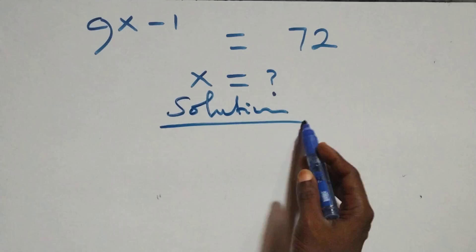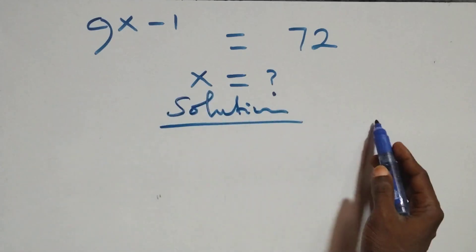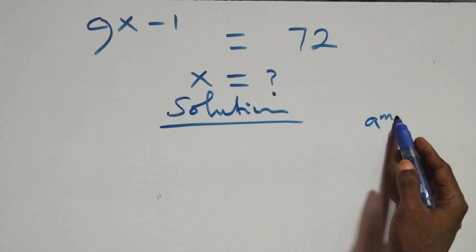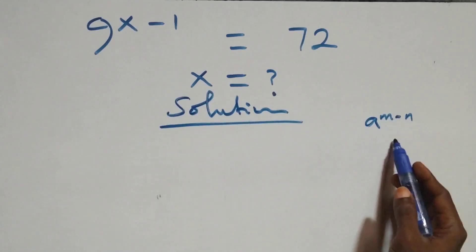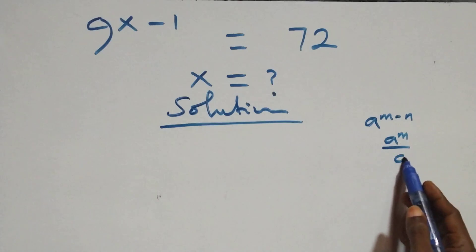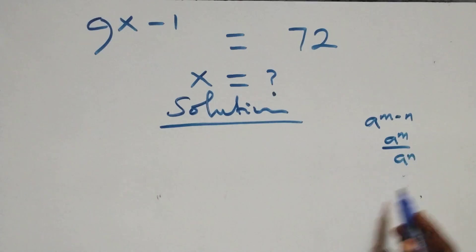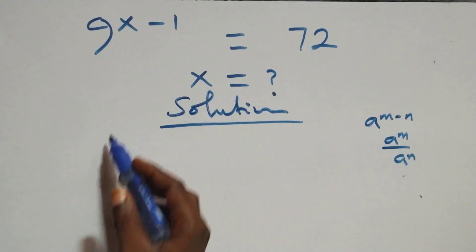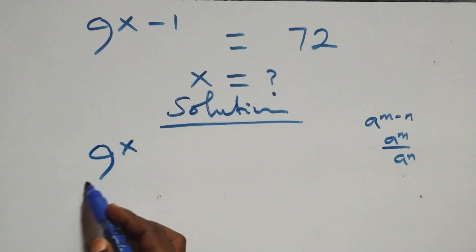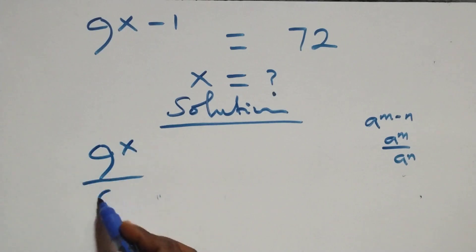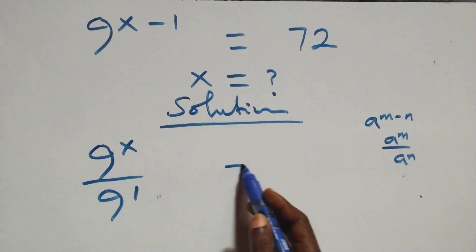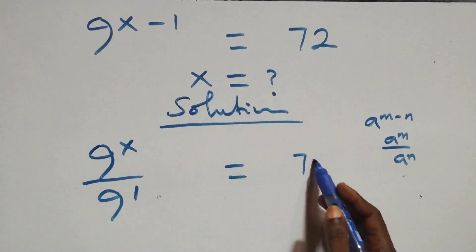What we have here: this follows the rule that a raised to power (n minus m) is the same thing as a raised to power n over a raised to power m. At this, we have 9 raised to power x over 9 raised to power 1, and that equals 72.